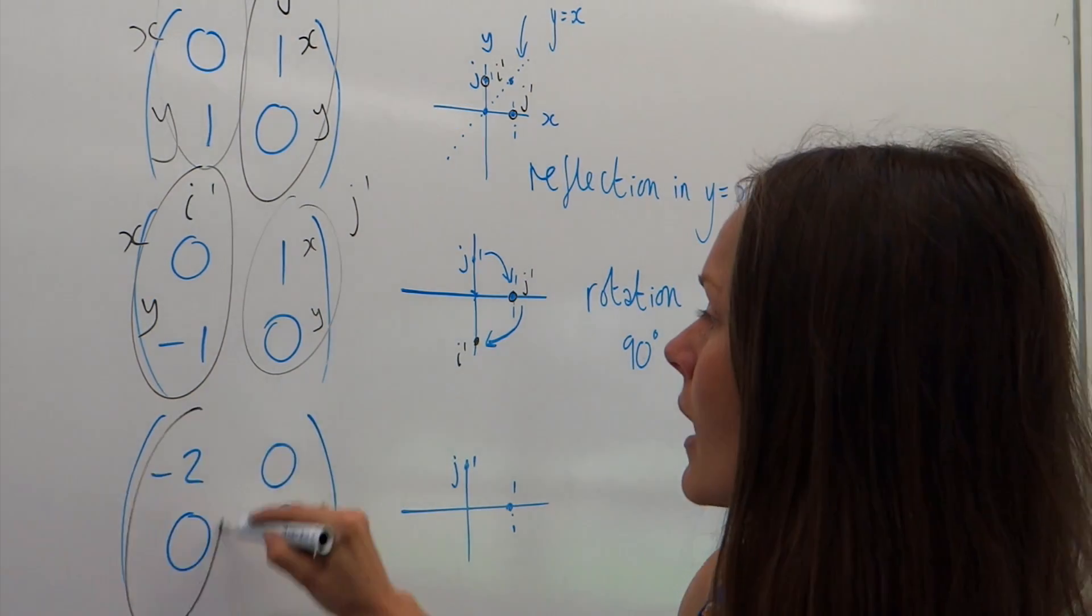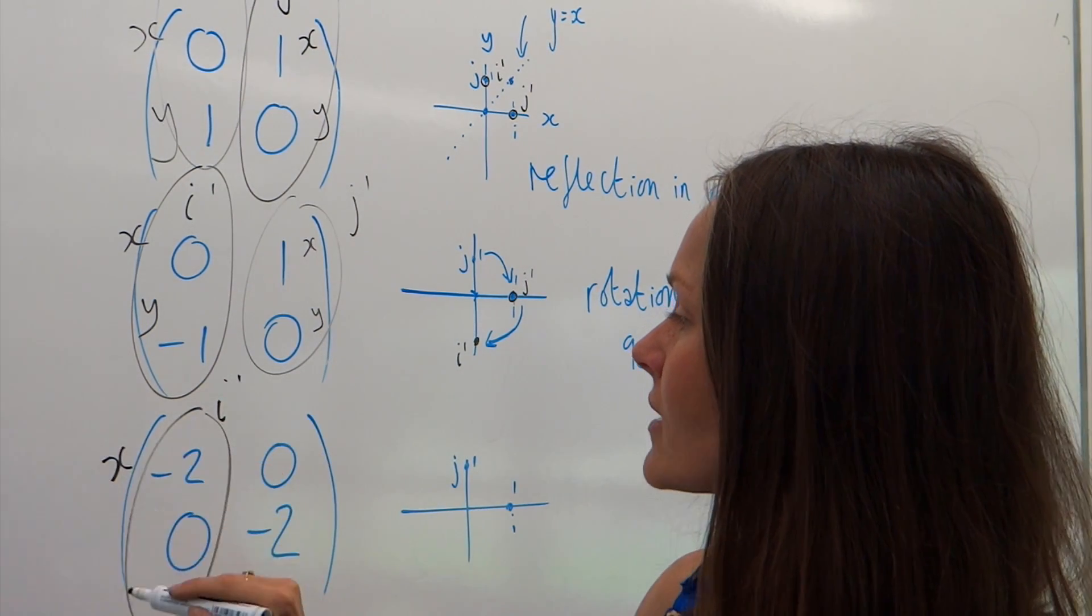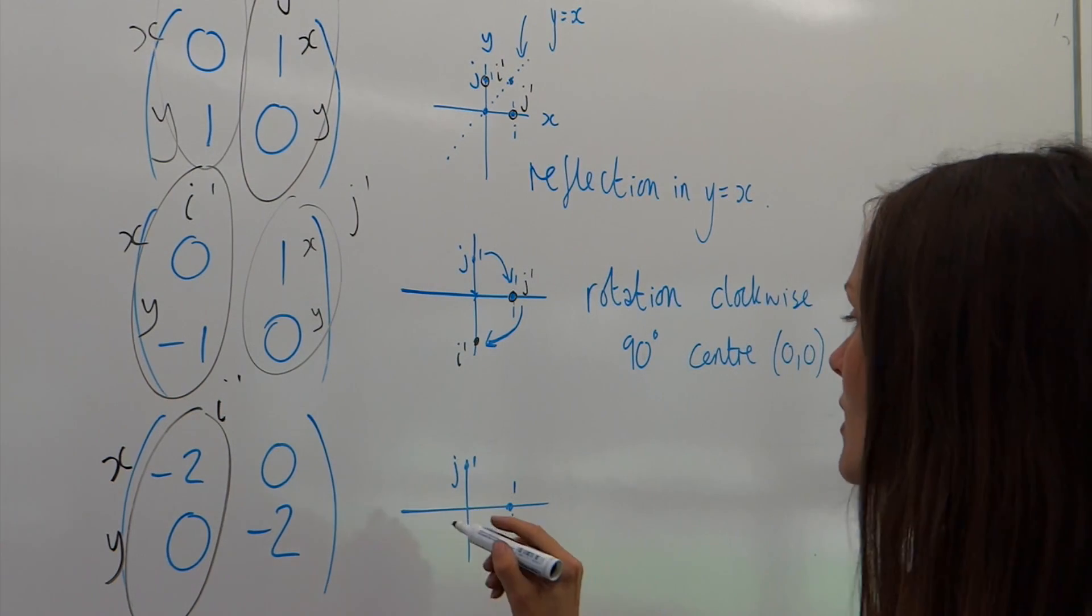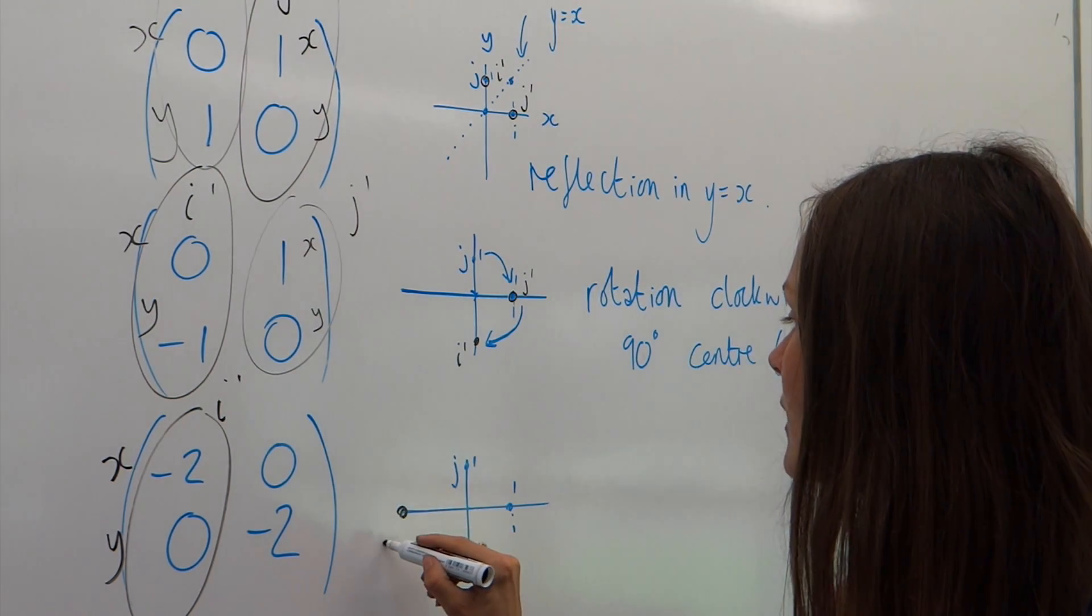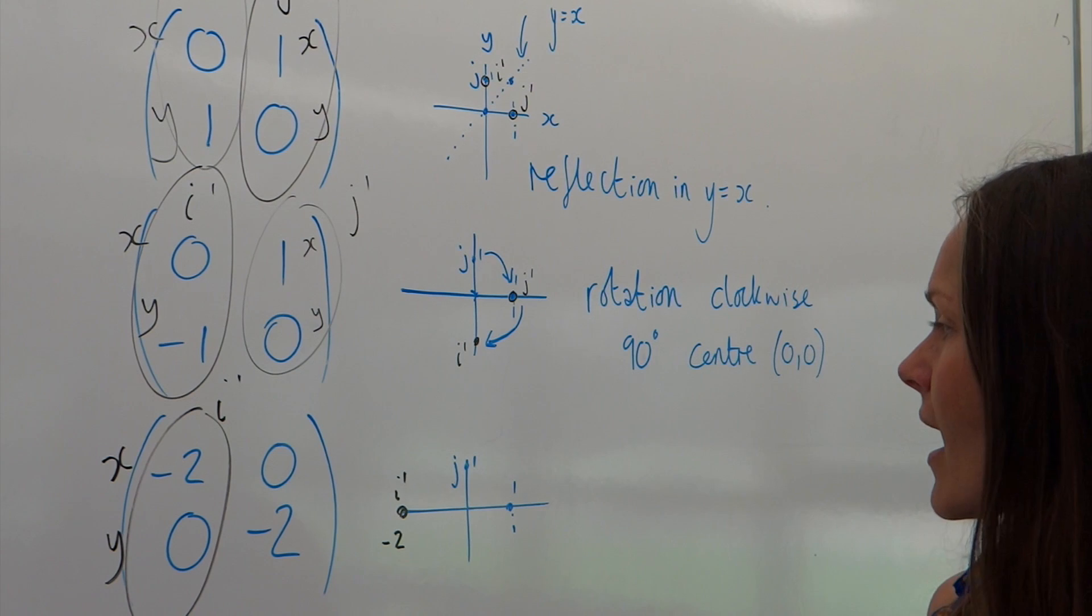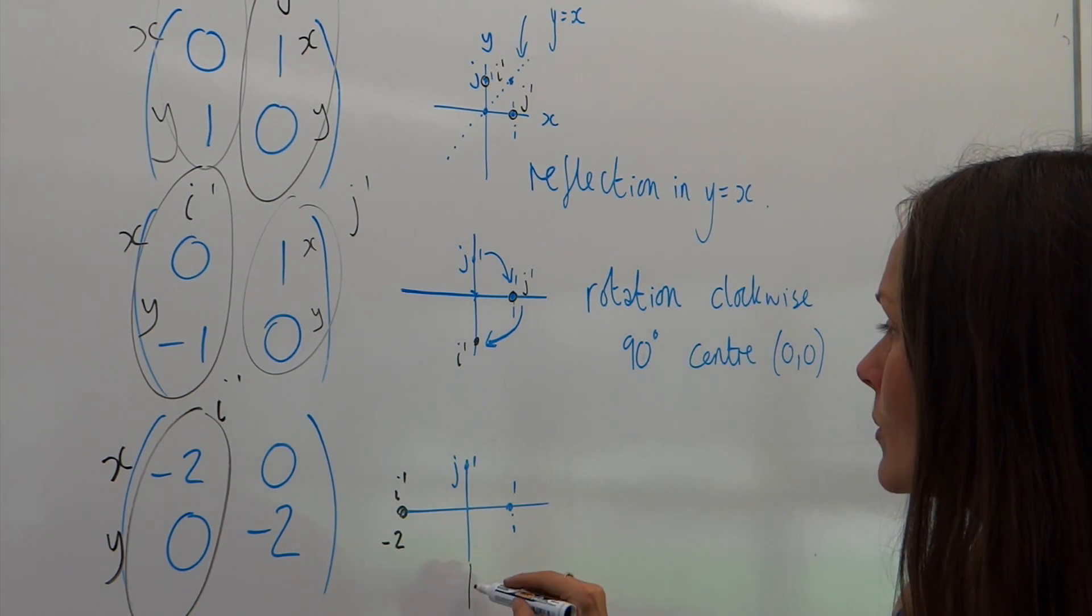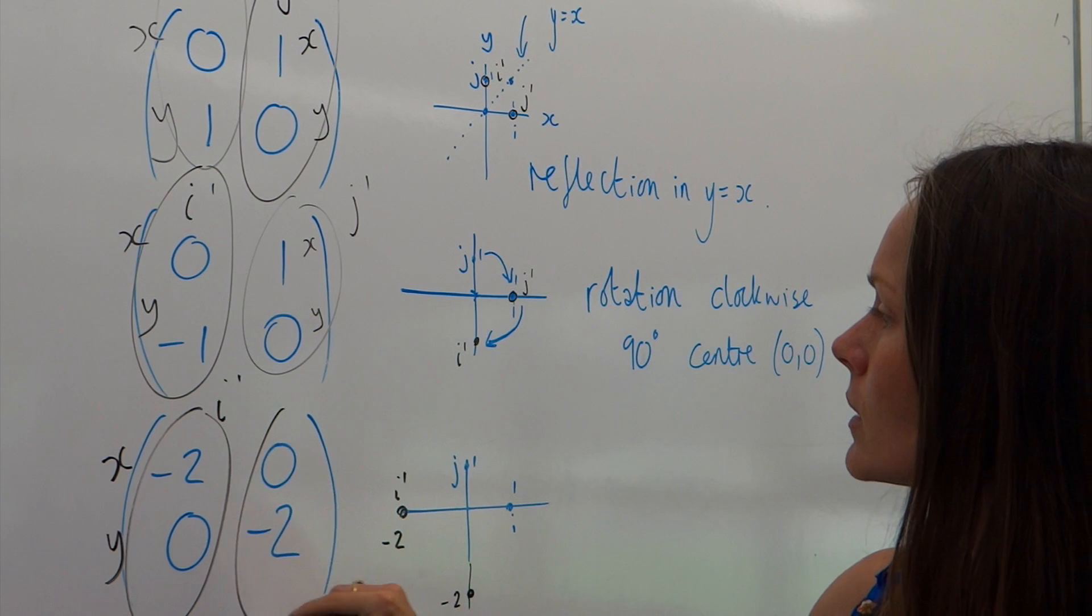Now, i dash has the coordinates of x is minus two, y is zero. So, that would be over here. So, that's i dash. And j dash is all the way down there. It's at minus two.